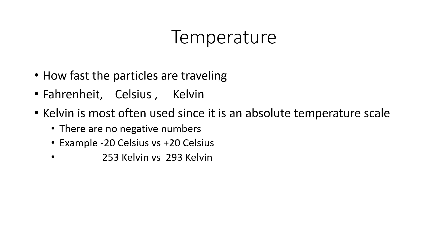For temperature, relating back to kinetic molecular theory, we're dealing with how fast the particles are traveling. We have three different temperature scales: Fahrenheit, Celsius, and Kelvin. Kelvin gets used most often because it's an absolute temperature scale — there are no negative numbers. When you don't have negative numbers, it makes calculations much easier. For example, minus 20 versus plus 20 in Celsius would look problematic in an equation, but converted to Kelvin they would be clearly different. Most likely, if you deal with temperature calculations in the future, you'll be dealing with those in Kelvin.